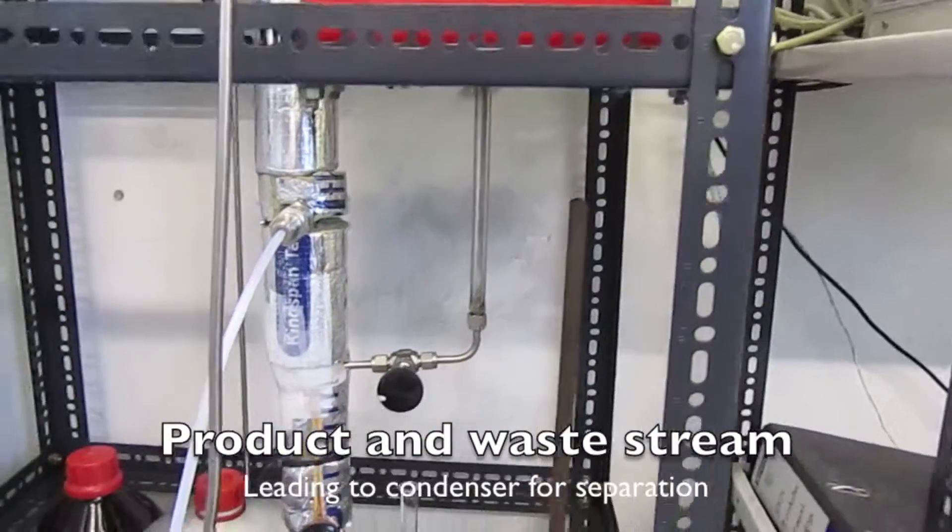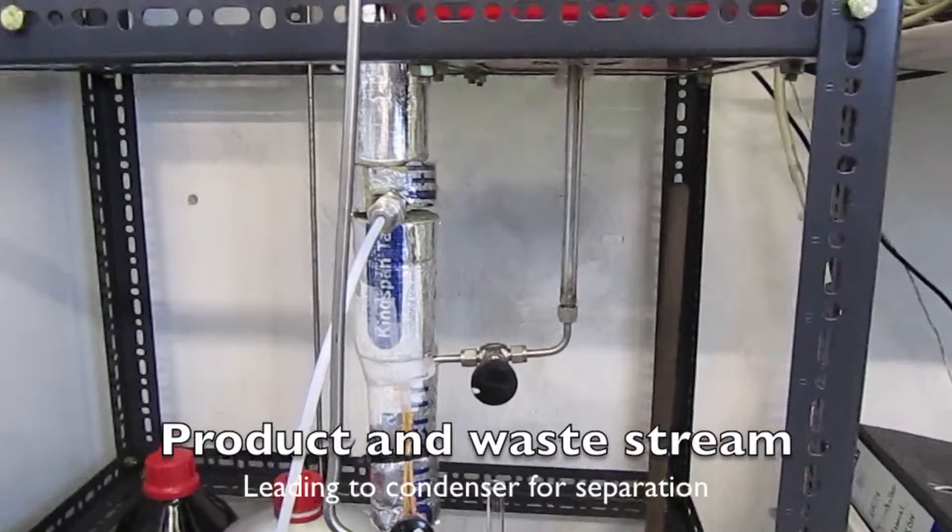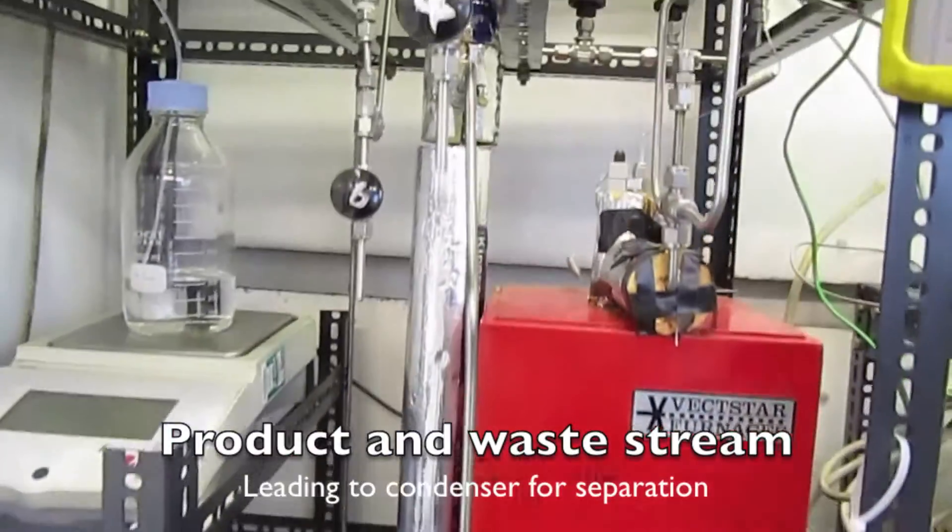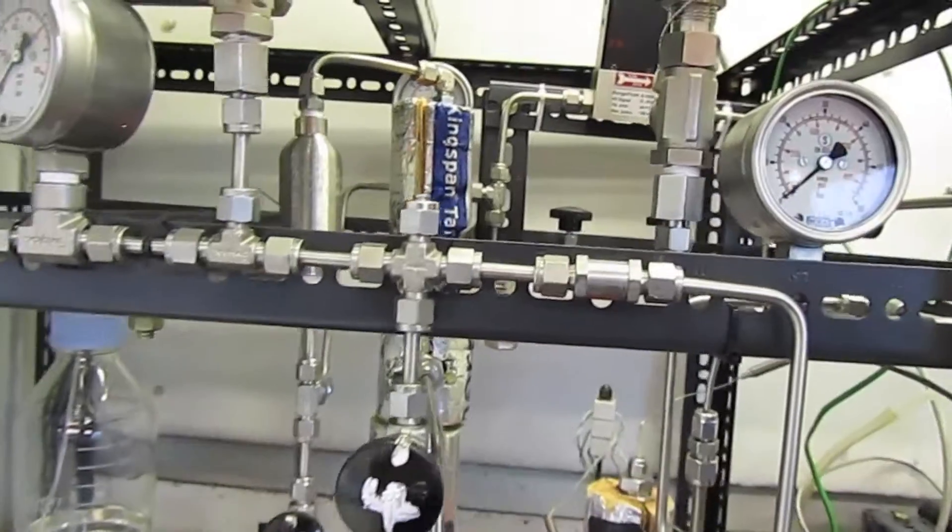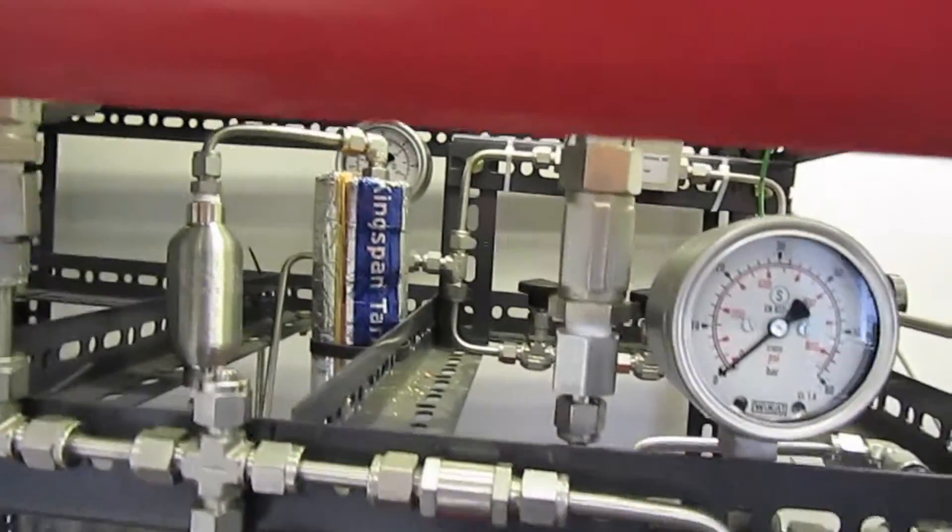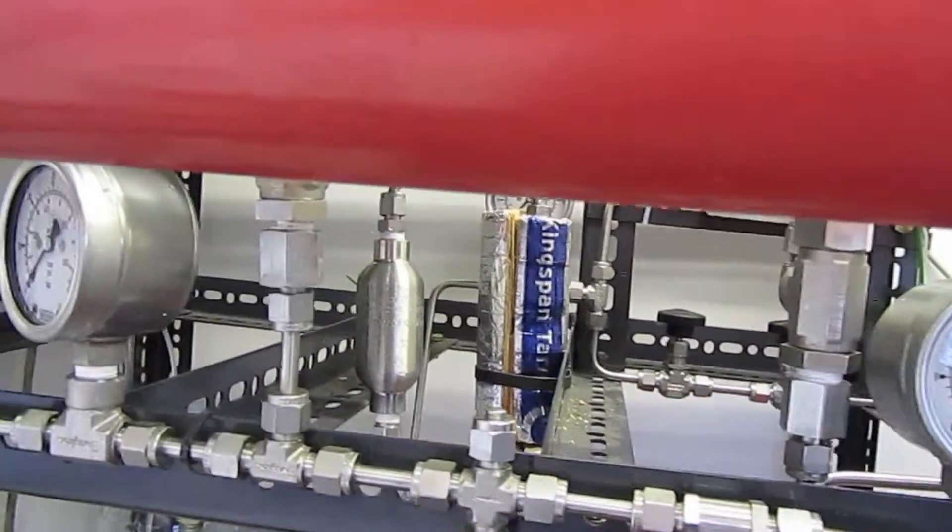The feedstocks pass through the reactor to the catalyst where some are converted to the desired products and the unreacted feedstock is considered as a waste stream. Both streams are collected and separated offline.